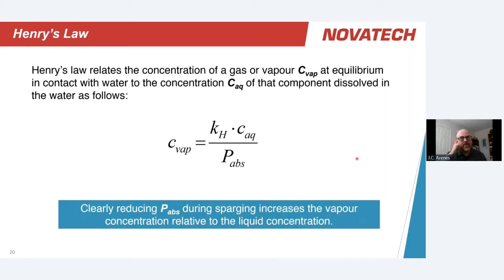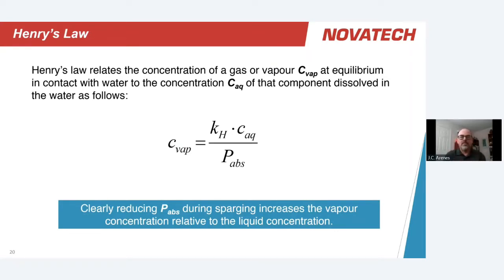A quick word about Henry's Law, which has guided the design of the Novatec sparger technology. In its most basic form, Henry's Law relates the concentration in the vapor phase to the concentration in the aqueous phase. What's most interesting is that the pressure the system is operated at is in the denominator — meaning that if we lower this pressure, we increase the concentration in the vapor phase. Since we're trying to pull hydrocarbons from solution in water into the sparge gas in the vapor phase, lowering the system pressure increases sparging efficiency.